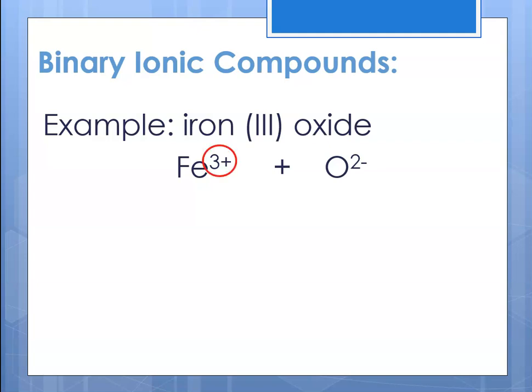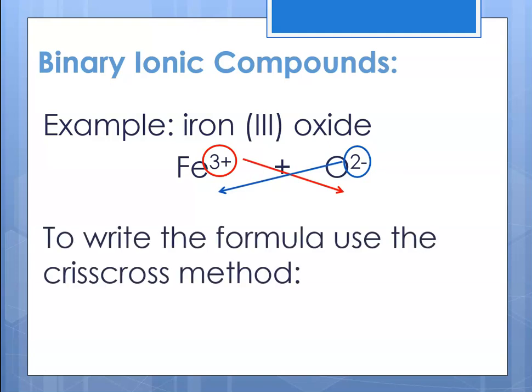So iron has a plus three and oxygen has a minus two. Now we crisscross: that three becomes a subscript and that two becomes a subscript. Writing this formula using the crisscross method, we end up with Fe₂O₃.